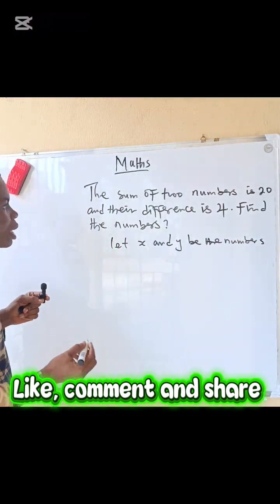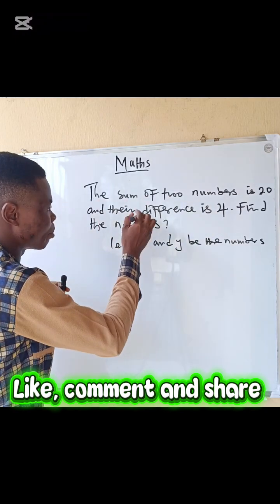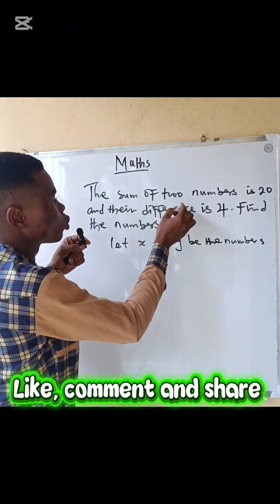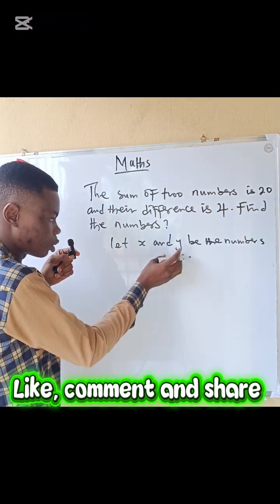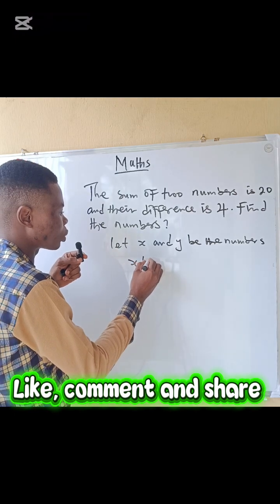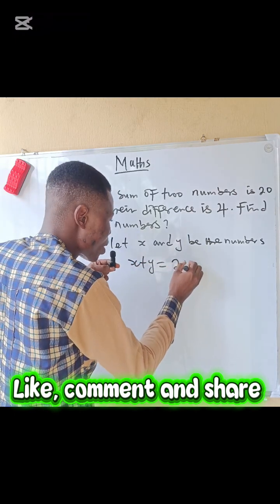We don't know the numbers. So the first statement says the sum of two numbers is 20. These are the two numbers, so x plus y equals 20. That is equation one.